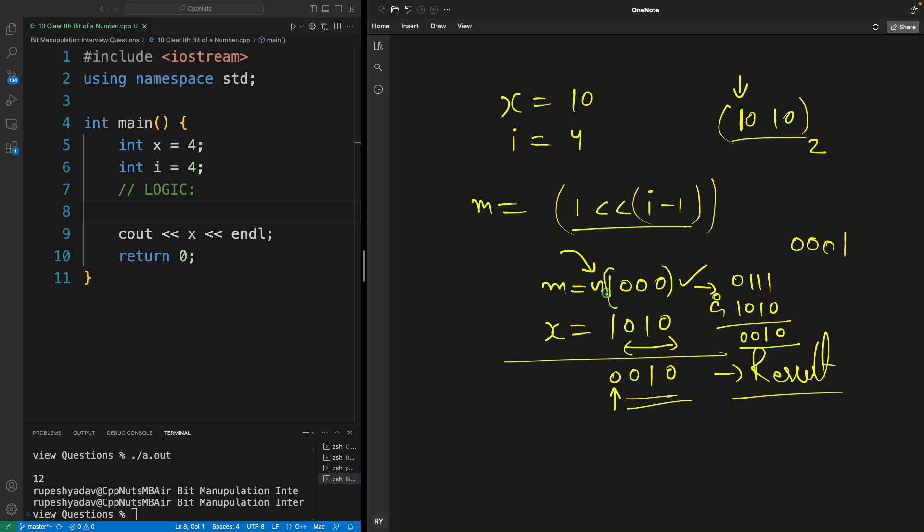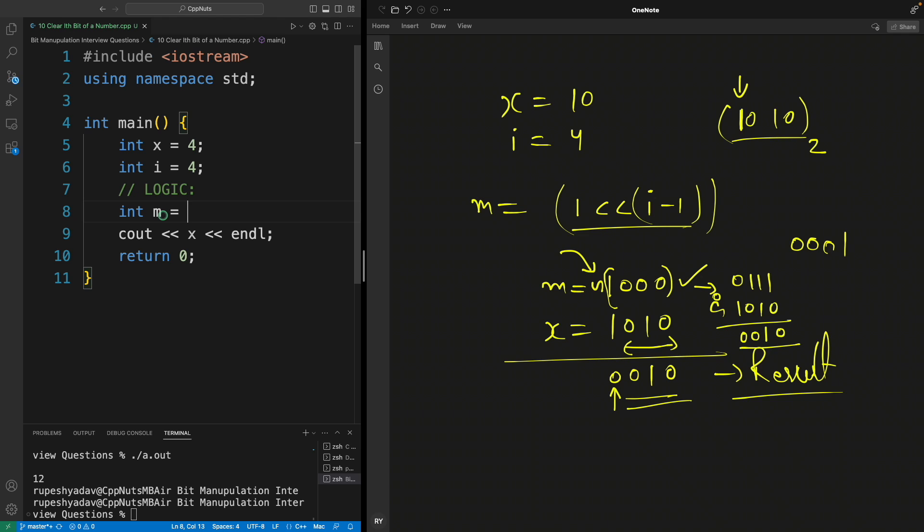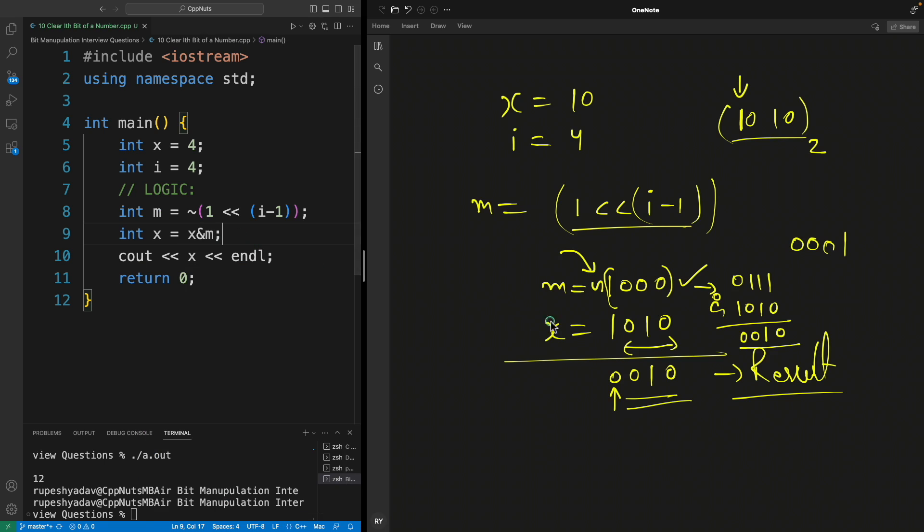shifted i minus one times. And let me do the masking - the tilting - here itself. So if I apply tilde here, it's also valid, right? And now if I say x equals x AND m - notice this is 2, so 10 in binary is 2 in decimal. We should be getting